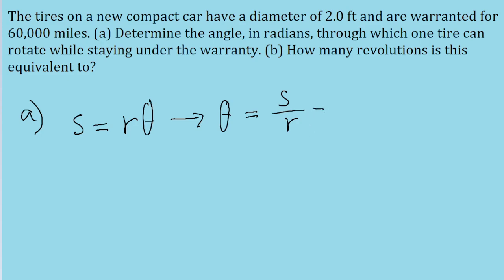The problem tells us that the warranty calls for a travel distance of 60,000 miles, so S is equal to 60,000, since a point at the edge of the wheel is going to travel tangentially that distance in order for it to remain under the warranty.